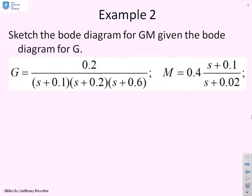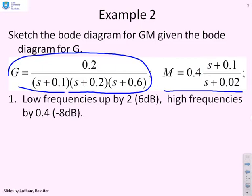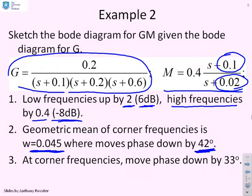Here's a second example. Sketch the Bode diagram for GM given the Bode diagram for G, where G = 0.2 / [(s+0.1)(s+0.2)(s+0.6)] and the lag compensator is M = 0.4·(s+0.1)/(s+0.02). The low-frequency gain is 0.4 × 0.1/0.02 = 2, which is 6 decibels — so a 6 dB upward shift at low frequencies. At high frequencies, the gain is just 0.4, which is −8 decibels, so we shift down there. The geometric mean of the corner frequencies 0.1 and 0.02 is 0.045, giving a maximum phase dip of 42 degrees; at the corner frequencies the phase moves down by 33 degrees.